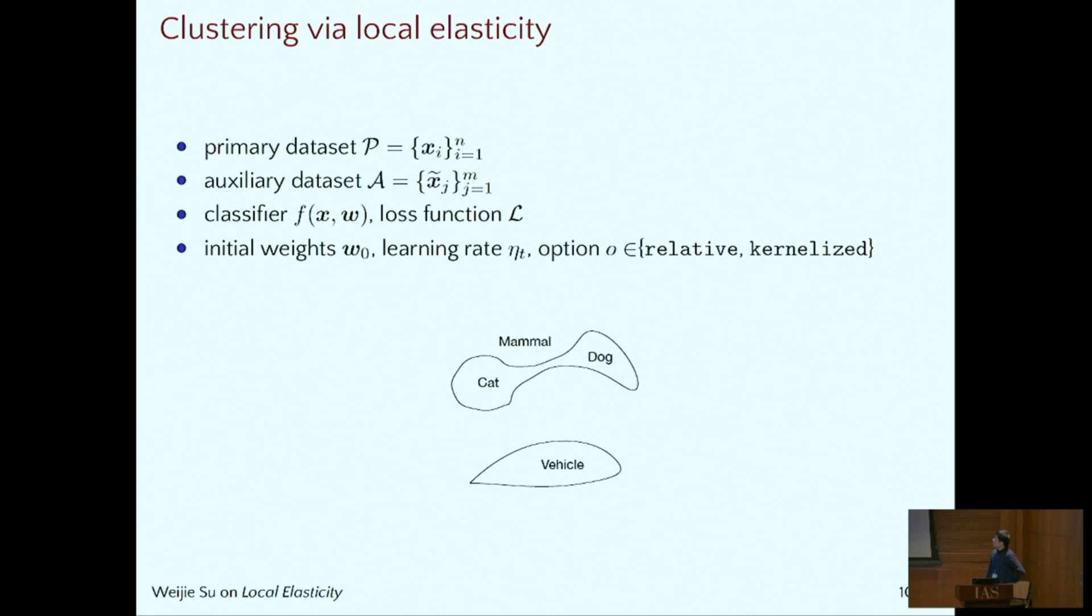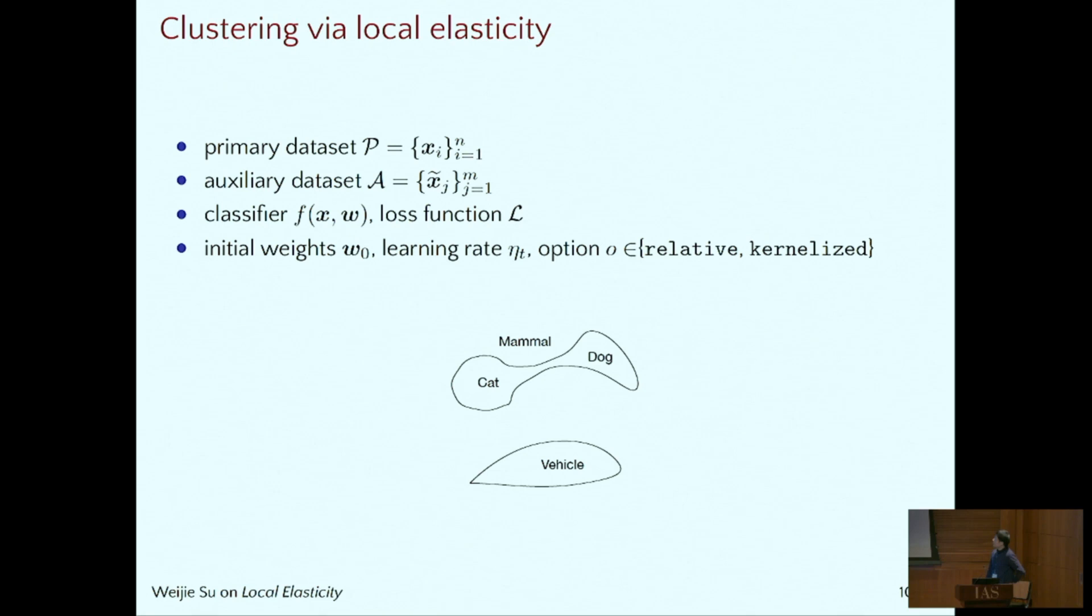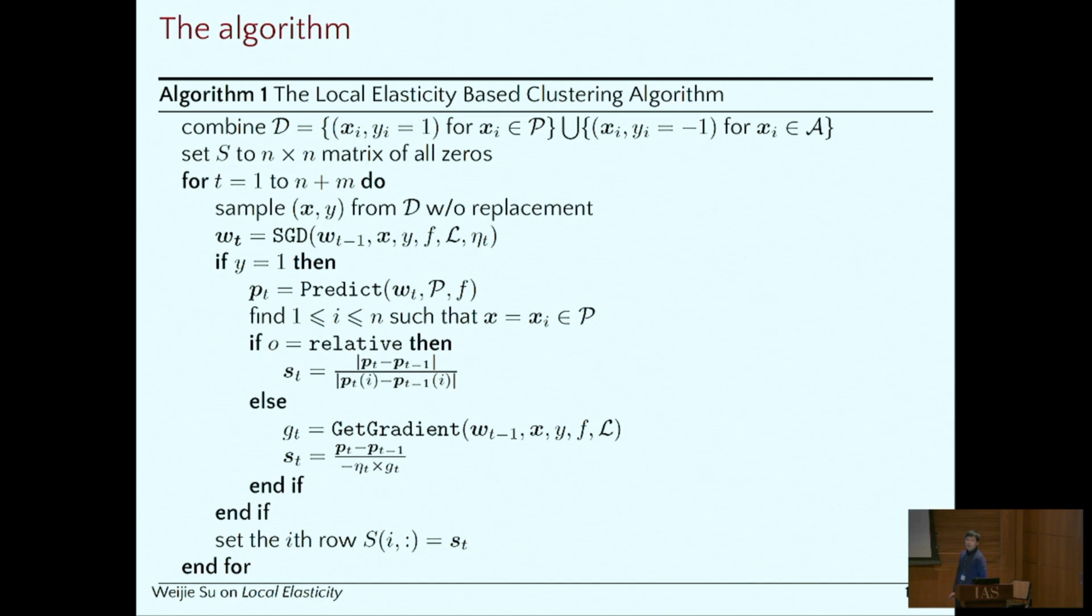We can come up with a clustering algorithm by leveraging local elasticity. Roughly speaking, we are provided with the mammal class, but we don't know which is cat, which is a dog. But we can train mammal and the vehicle, which is auxiliary data set. And then we can construct a similarity matrix between any points from the mammal class. So this is our algorithm.